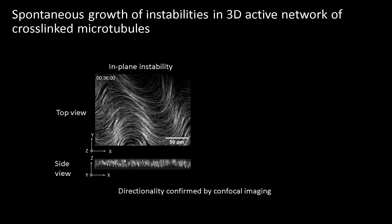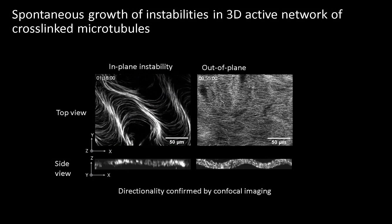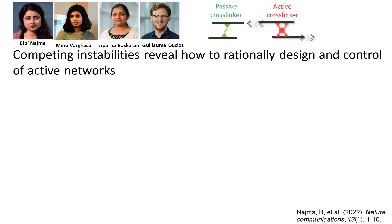A band instability, where the network spontaneously deforms in plane, and a buckling instability, where the active network buckles out of plane. The balance between activity and crosslinking controls the direction of instability. Our experimental results show that a crosslinked active network can either exhibit a fluid-like band instability, or a solid-like out-of-plane buckling.